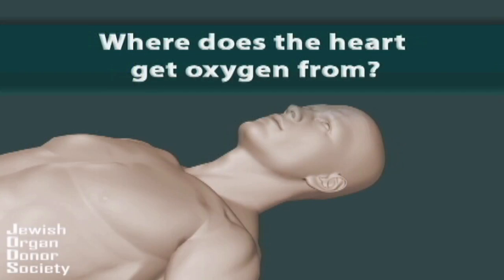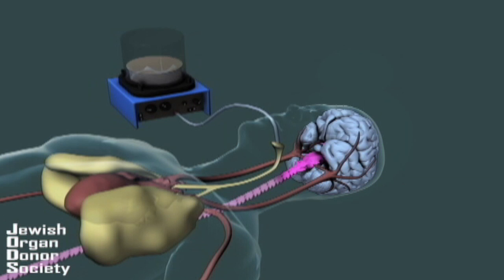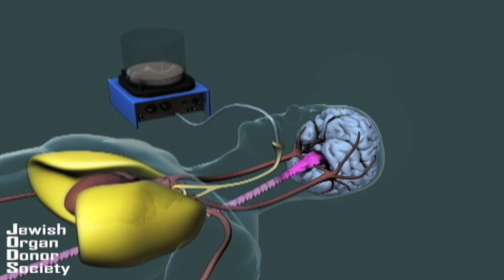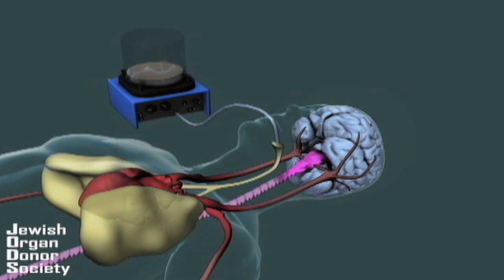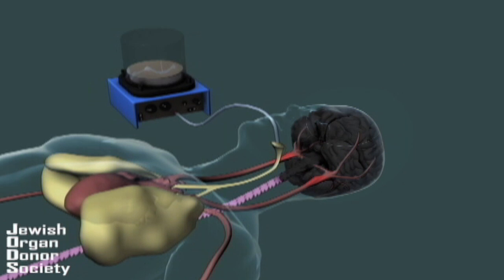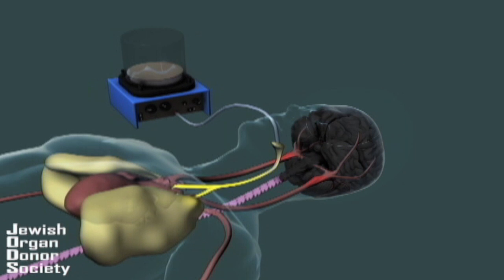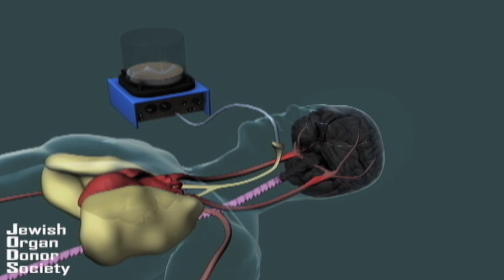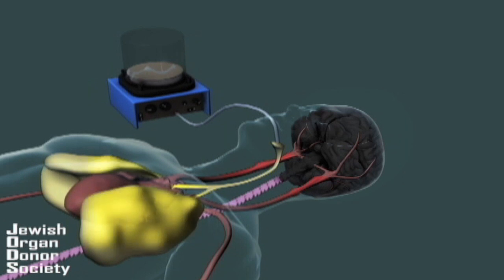The tests are performed twice with an interval of 6 hours. But how is it possible for the heart of a brain dead patient to keep beating? Where does the heart get oxygen from? The patient has been put on a ventilator to help him breathe. Afterwards the brainstem dies. Even though the brainstem is dead and the lungs no longer function, the heart continues to beat because it is artificially being supplied oxygen from the ventilator.